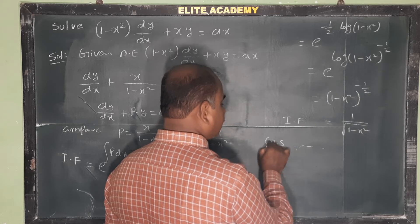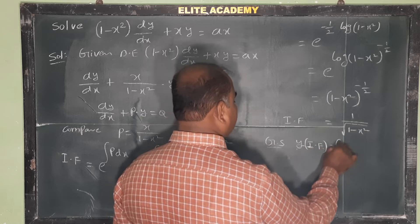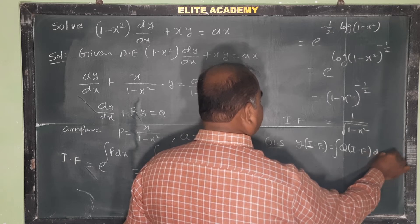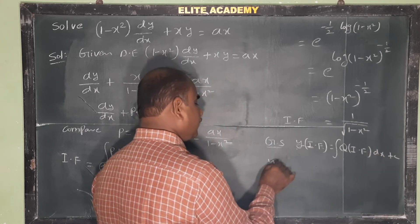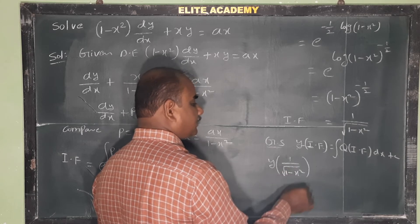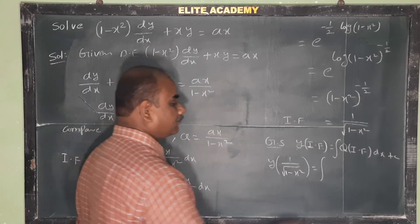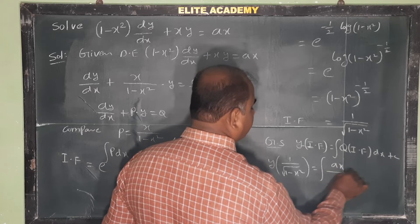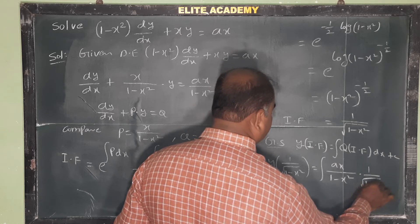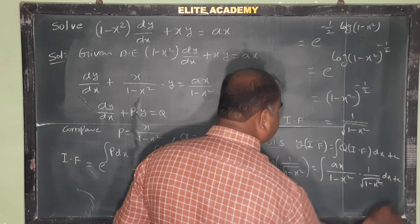Now we write the general solution. The formula is y · IF = ∫ Q · IF dx + c. So y · (1/√(1 - x²)) = ∫ [ax/(1 - x²)] · [1/√(1 - x²)] dx + c.